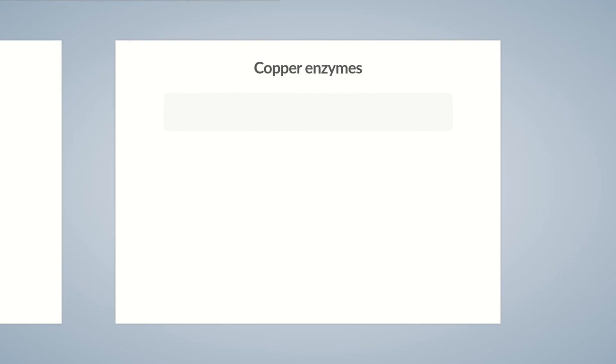To round things off, we'd like to explain why copper is essential for the body. The short answer is that copper is important in the function of many enzymes. Now, let's look at it in more detail. As metal ions, copper ions can easily absorb as well as release electrons by alternating between the two oxidation states, positive 2 and positive 1.